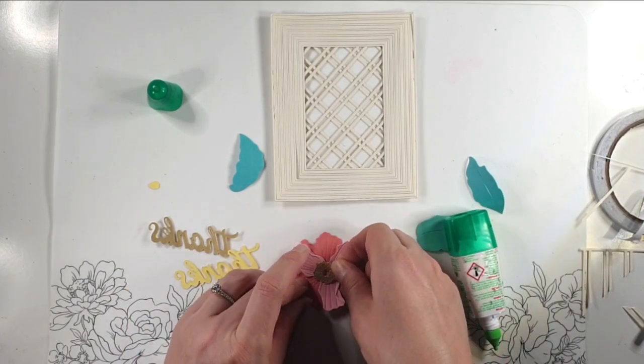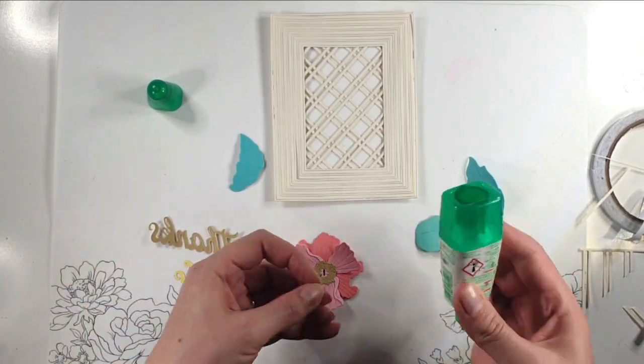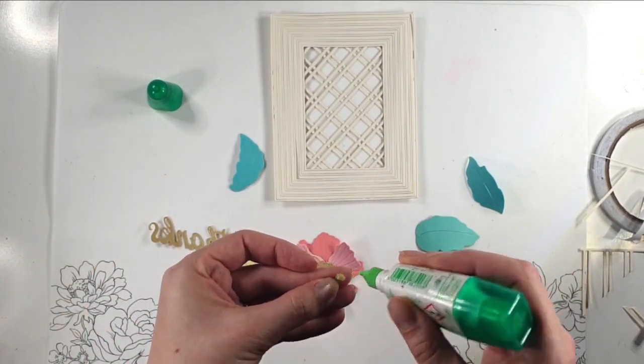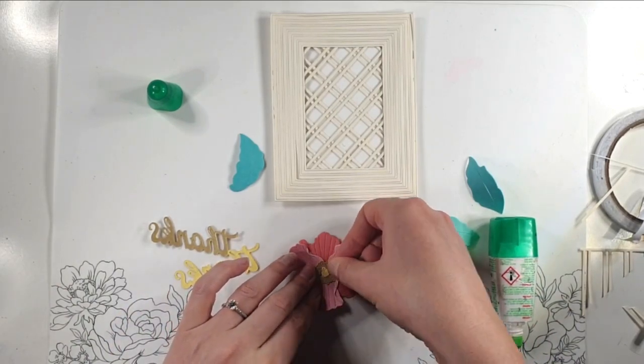I've got a bit of gold for this middle bit so I'm just going to pop that around there. And then I've just got a yellow bit to go in the middle and that will cover that arrow as well so you won't see that anymore.